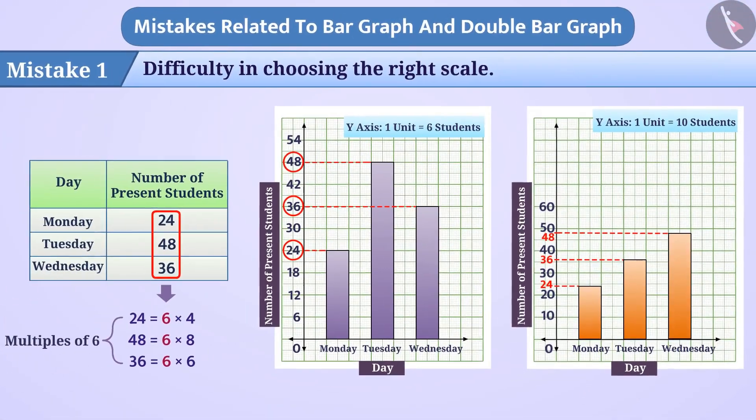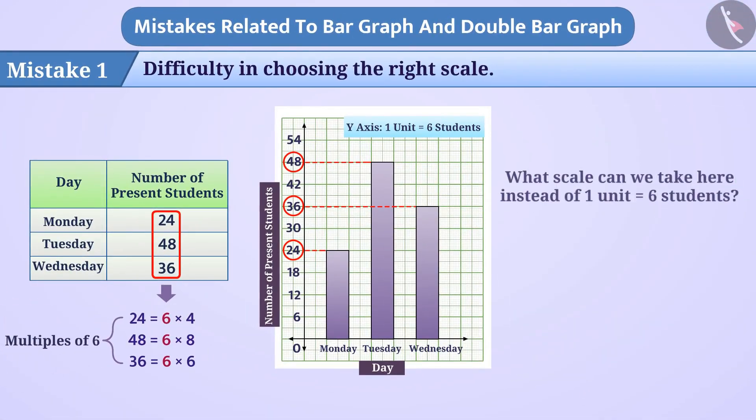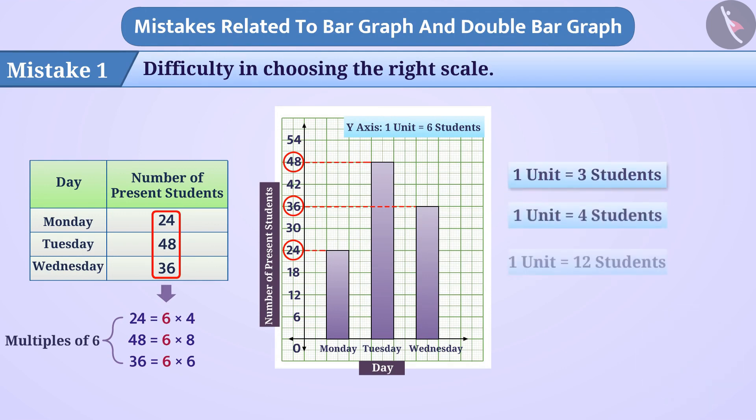Can you tell what scale can we take here instead of 1 unit is equal to 6 students? Think, think. We can also take this scale as 1 unit is equal to 3, 4 or 12 students.